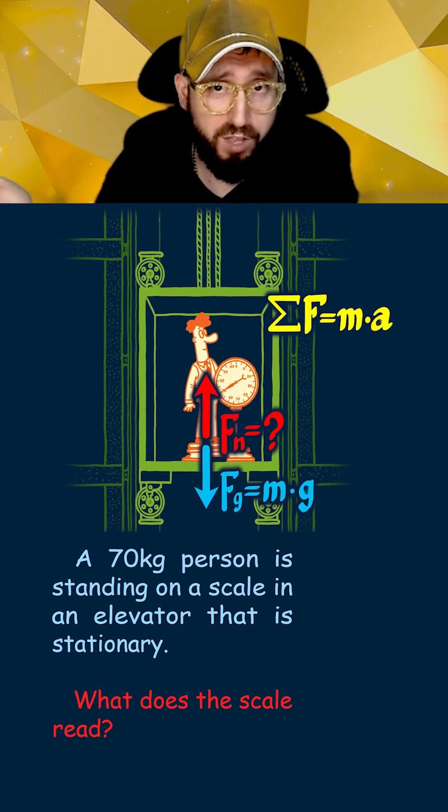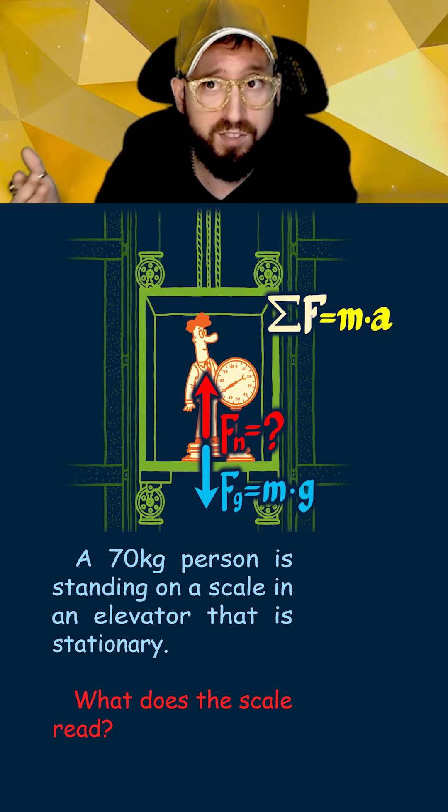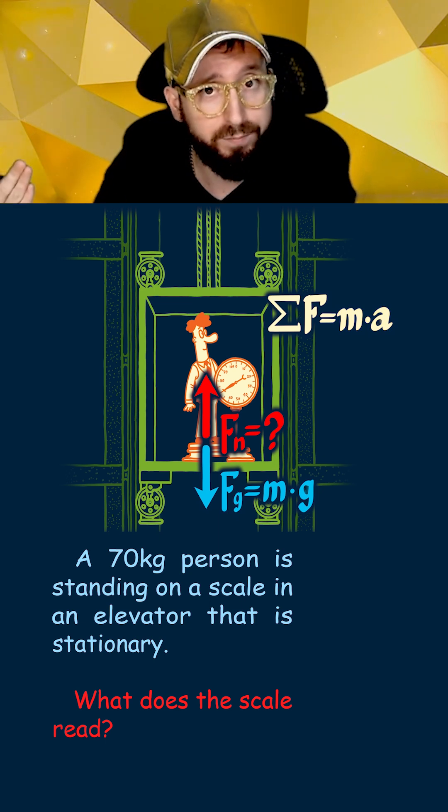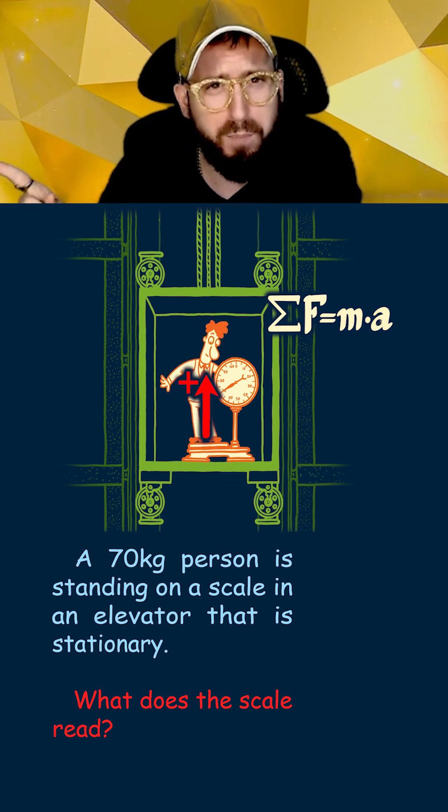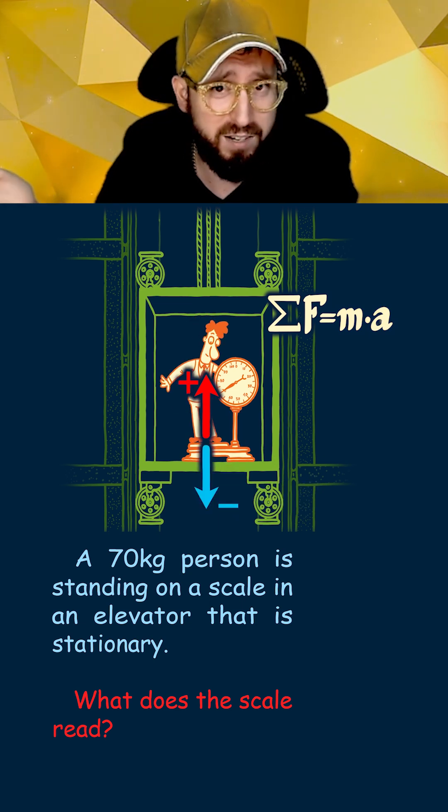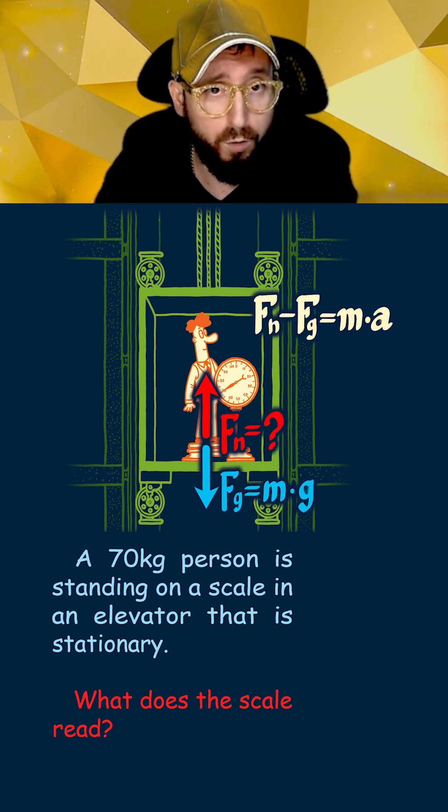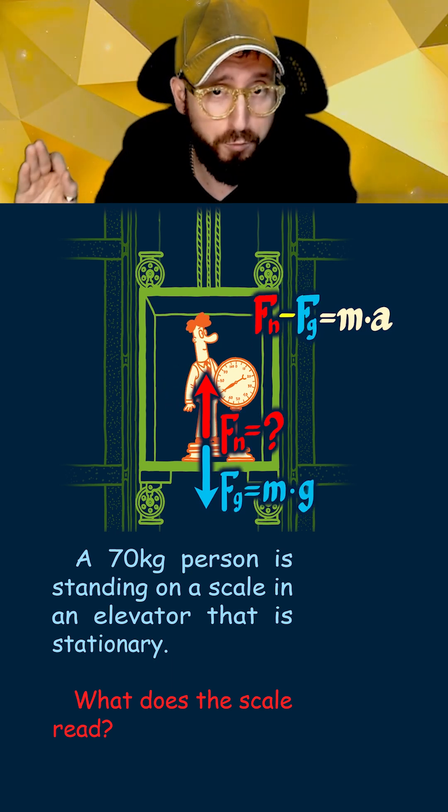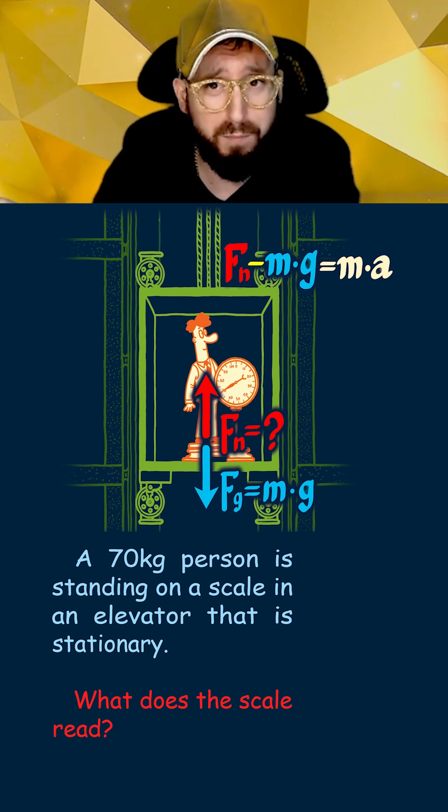Now we use Newton's second law, f equals ma, to add up all the forces and set them equal to the mass times acceleration. In this case, we're going to call anything pointing up as positive, and anything pointing down as negative. So when adding up all our forces, this gives us the normal force, fn, minus the force of gravity, mg, which is all equal to the mass times acceleration.